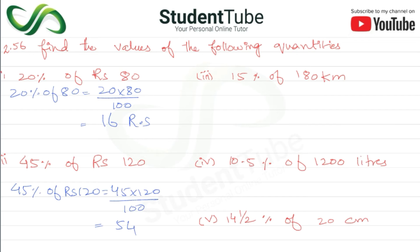Third, 15% of 180 km. Here 15% of 180 km is equal to 15 multiplied by 180 divided by 100. So the answer is 27 kilometers. You should also write the units.